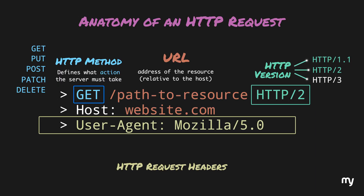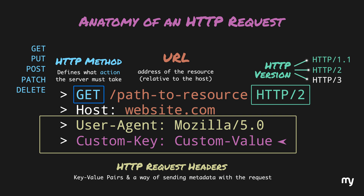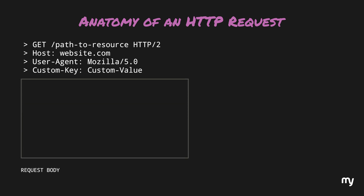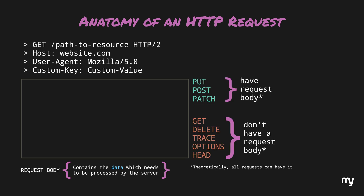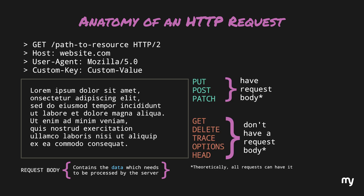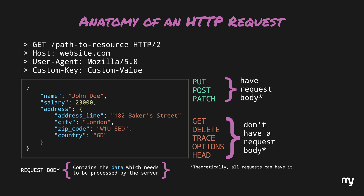Then we have HTTP request headers. Headers are just key-value pairs and a way of sending some metadata along with the request. This metadata can contain information about who the client was, data about whether the request is coming from an authenticated client, and so on. Some header keys are conventionally used for specific purposes, but we are free to send custom headers as well. Optionally, we can also have a request body which contains the data which needs to be processed by the server. Some requests have it, some don't. This body can contain plain text or data in key-value pairs arranged in JSON format, and so on.